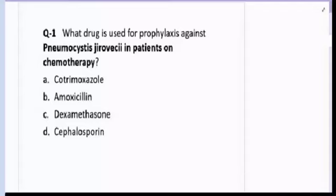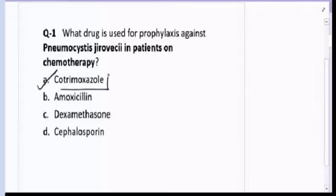Good morning friends. Let's start with a pharmacology question paper. Question number one: what drug is used for prophylaxis against Pneumocystis jirovecii in patients on chemotherapy? The drug of choice for Pneumocystis jirovecii is cotrimoxazole. So the correct answer for question number one is cotrimoxazole.